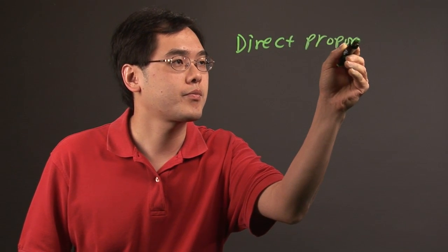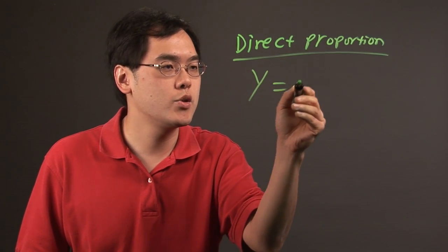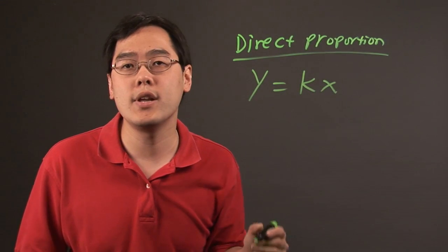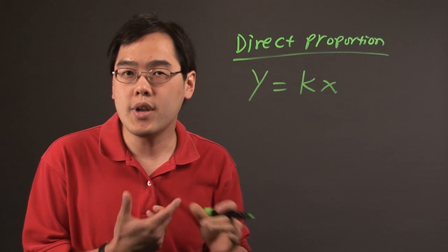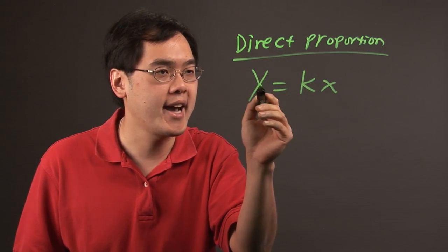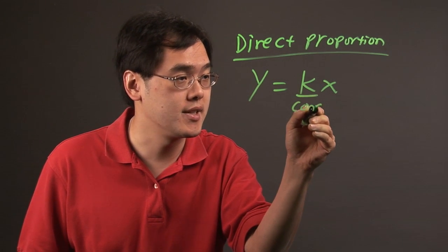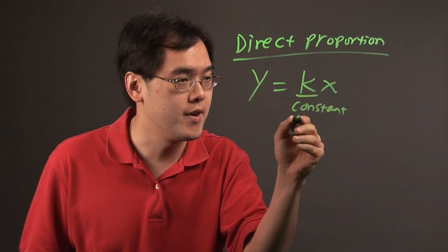You have a situation where y equals kx. There is a non-fraction relationship between the variables. Y and x are your variables, and k is the constant of variation.